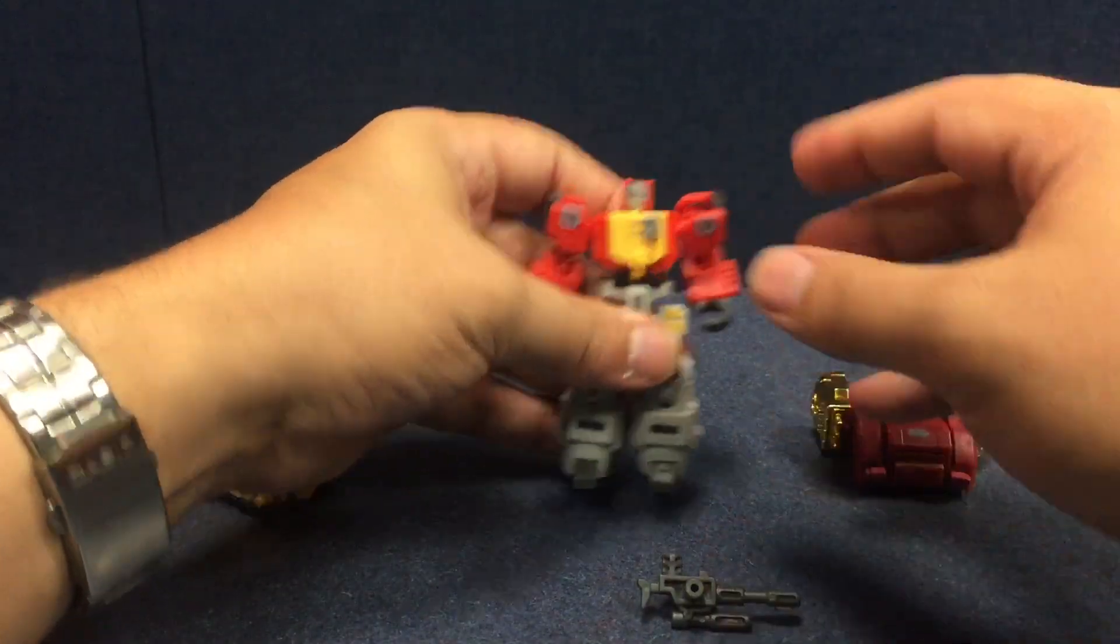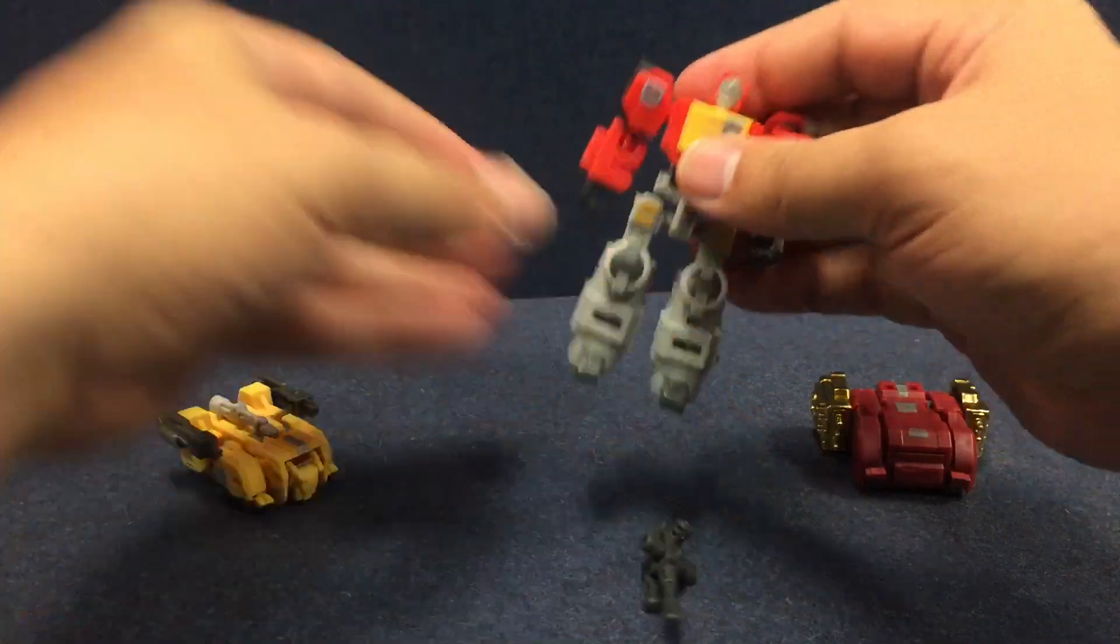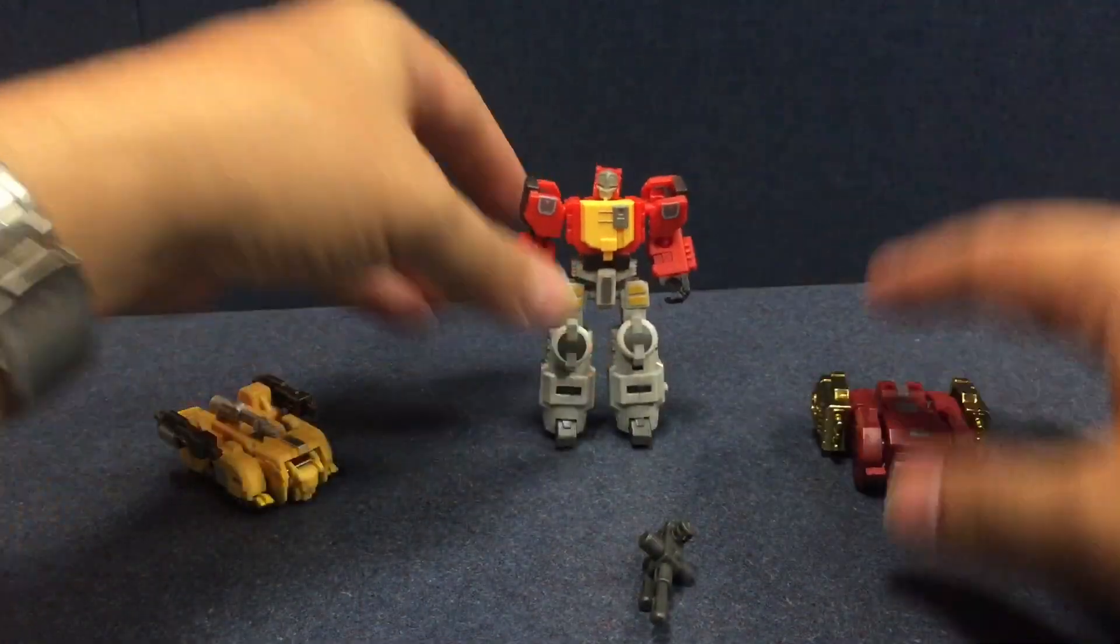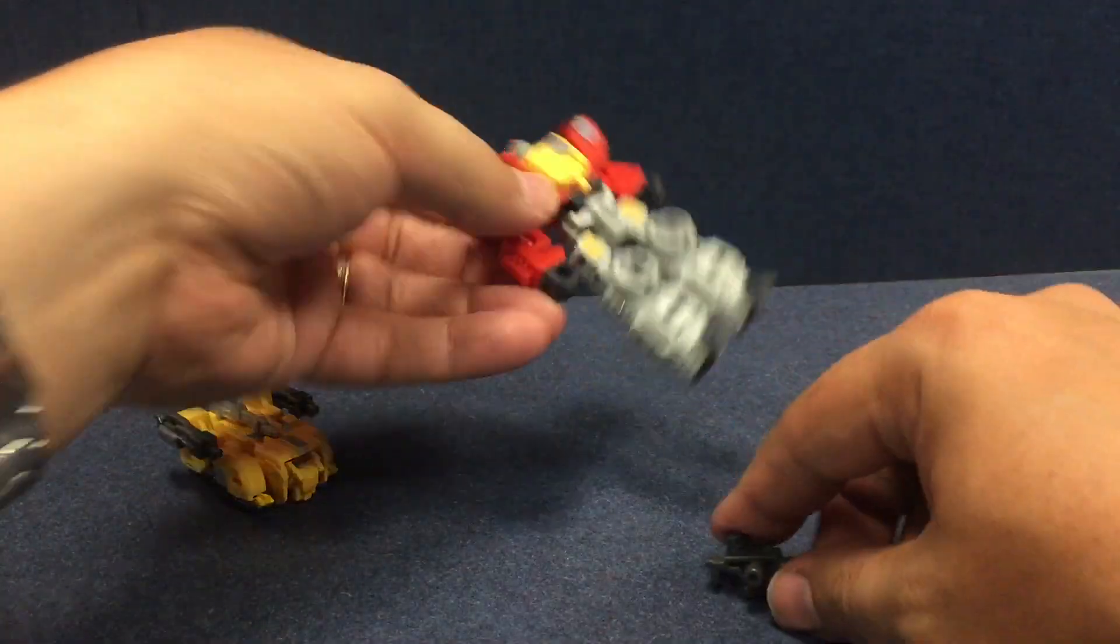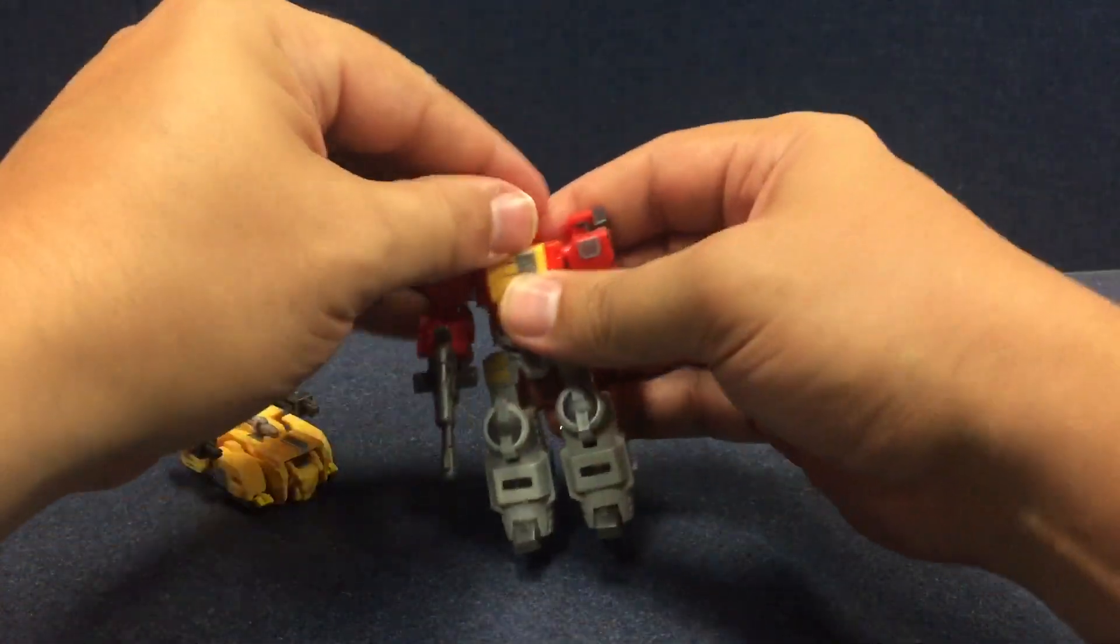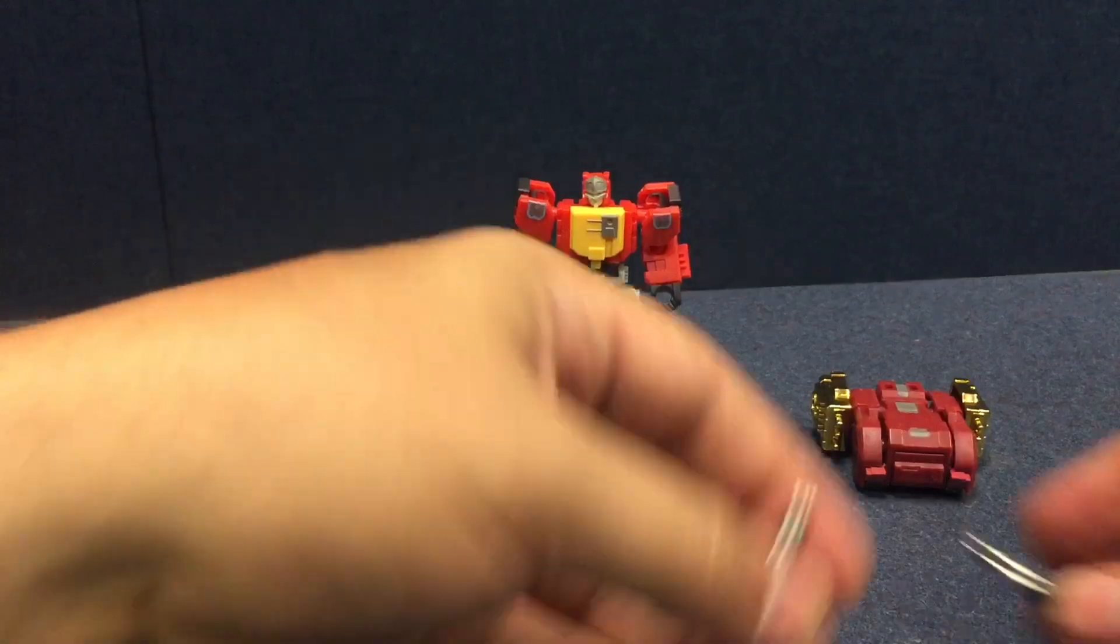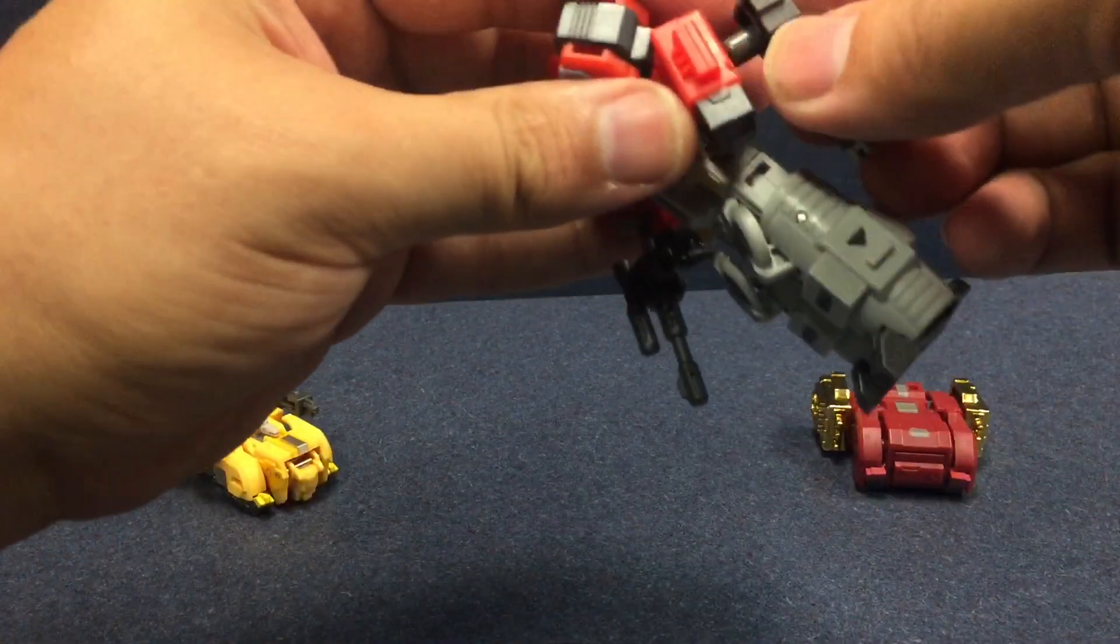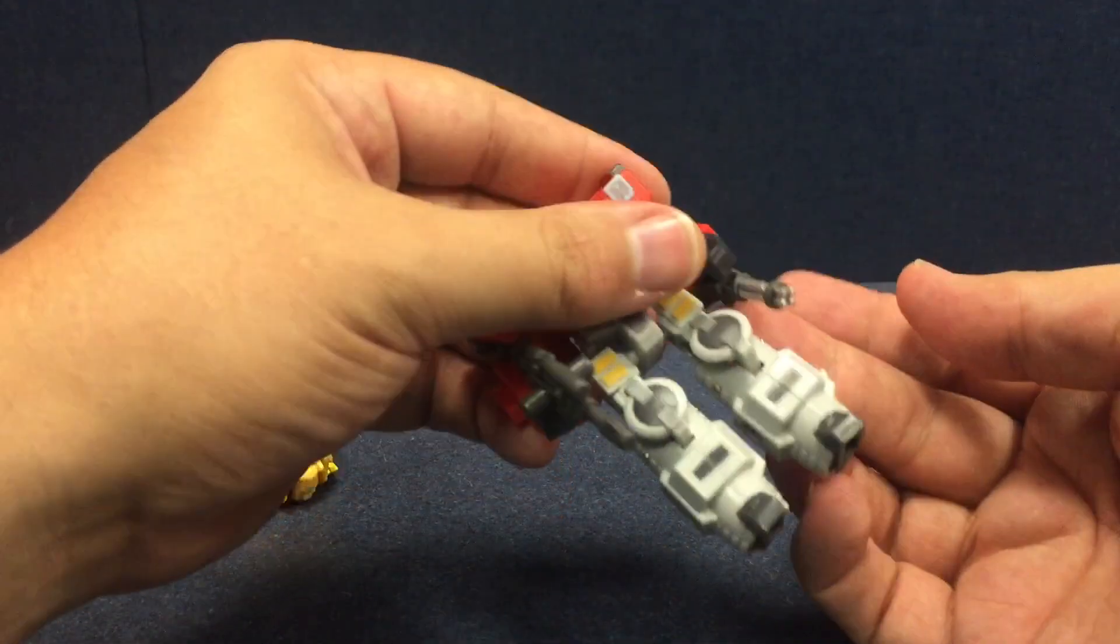The reason I chose to transform him first into robot mode before I dealt with the other two is because, and he can hold his pistol obviously, or his rifle. His gun. And you can attach these to the back of his arms as well if you want to give him some extra weaponry.